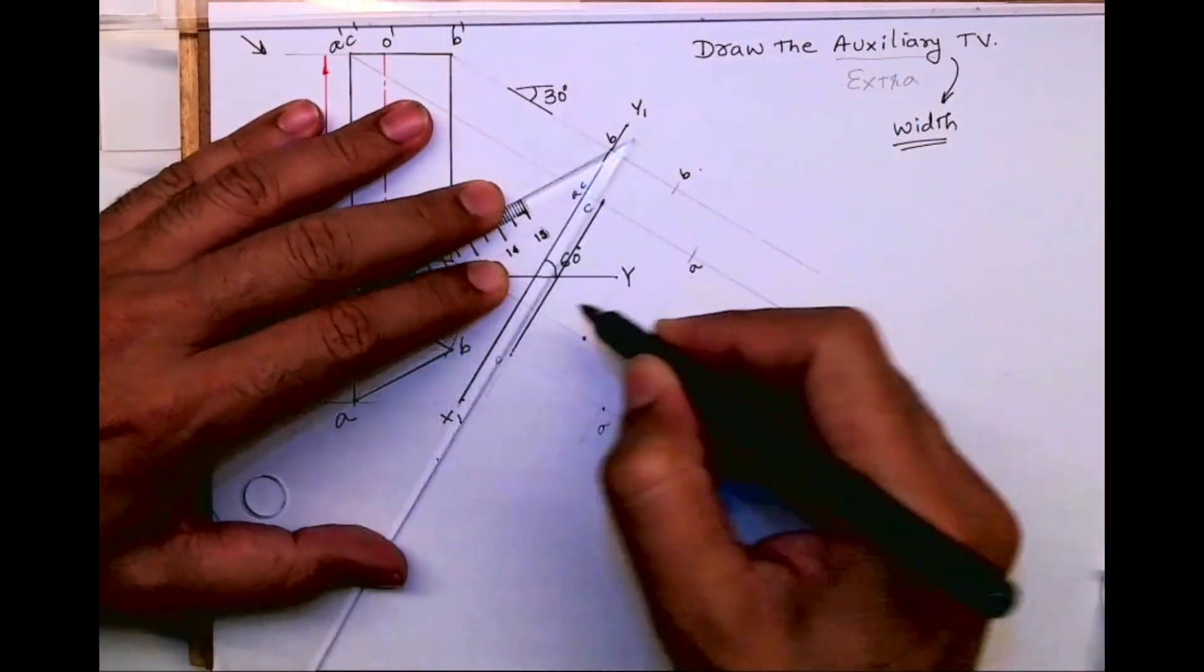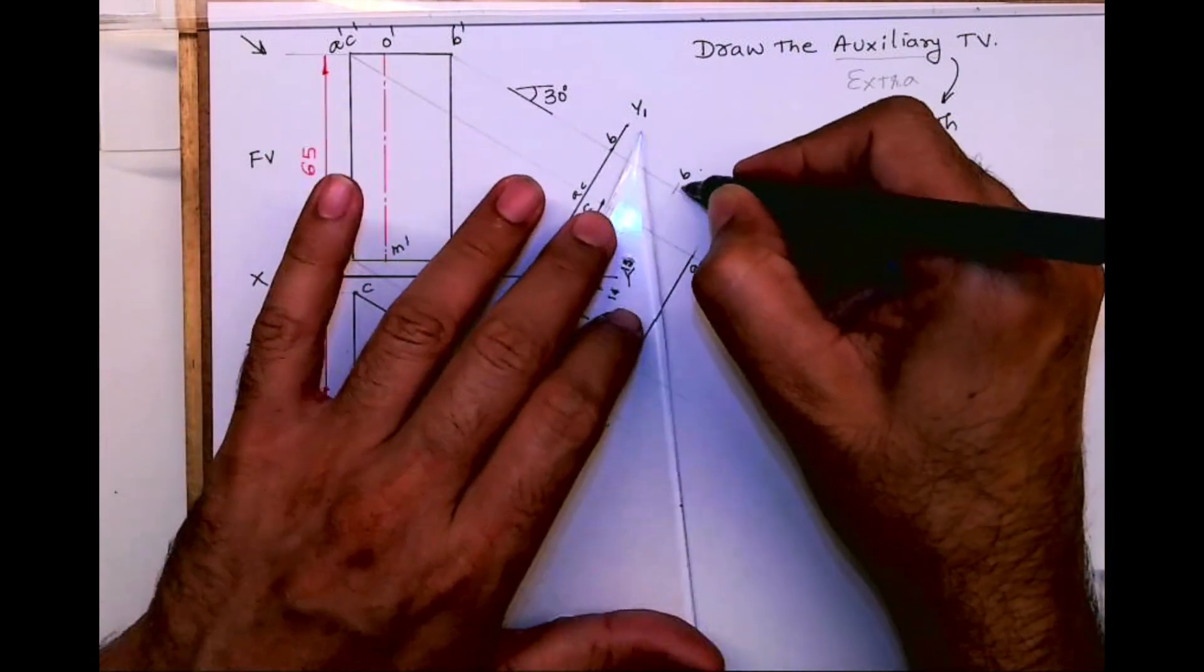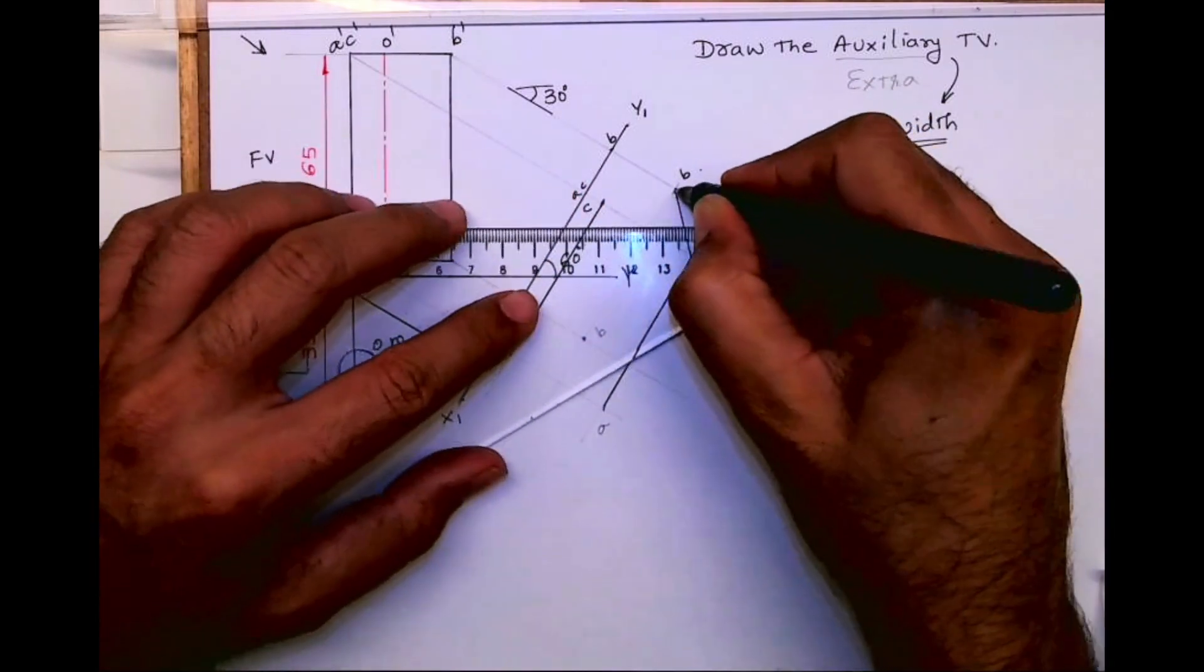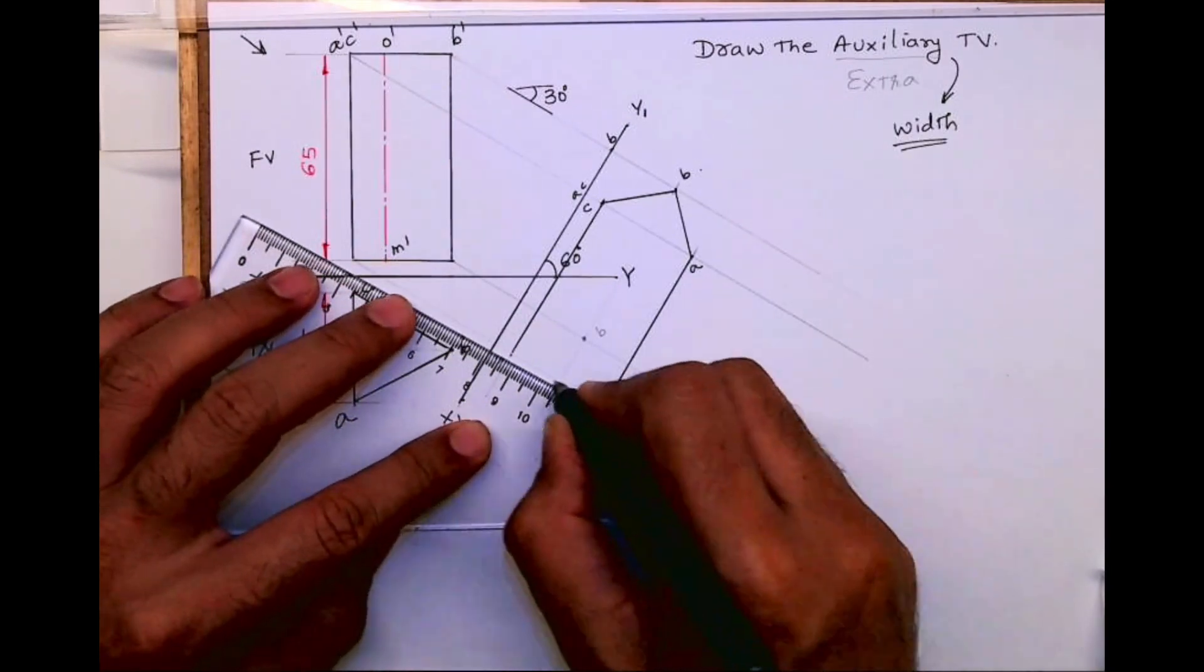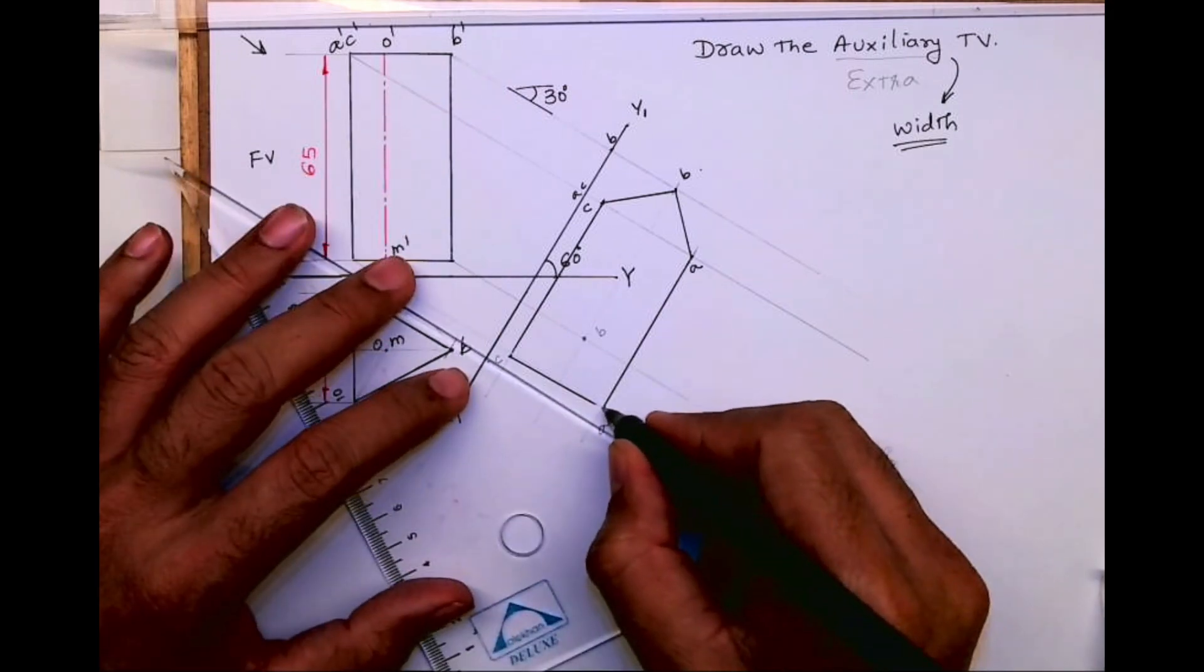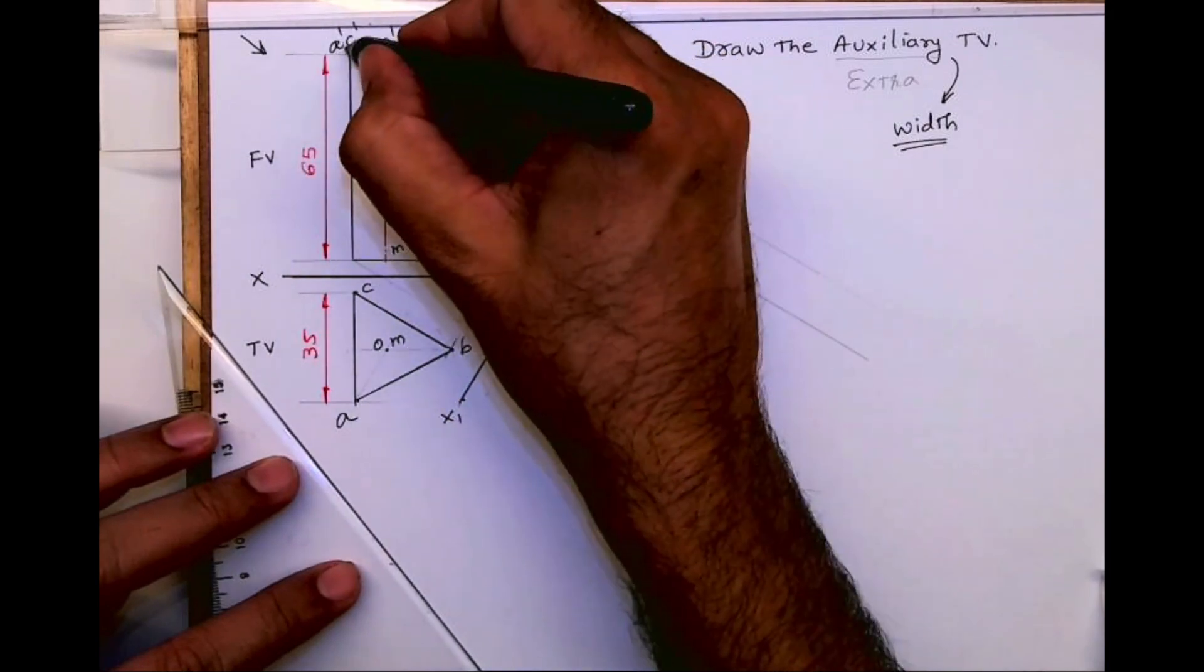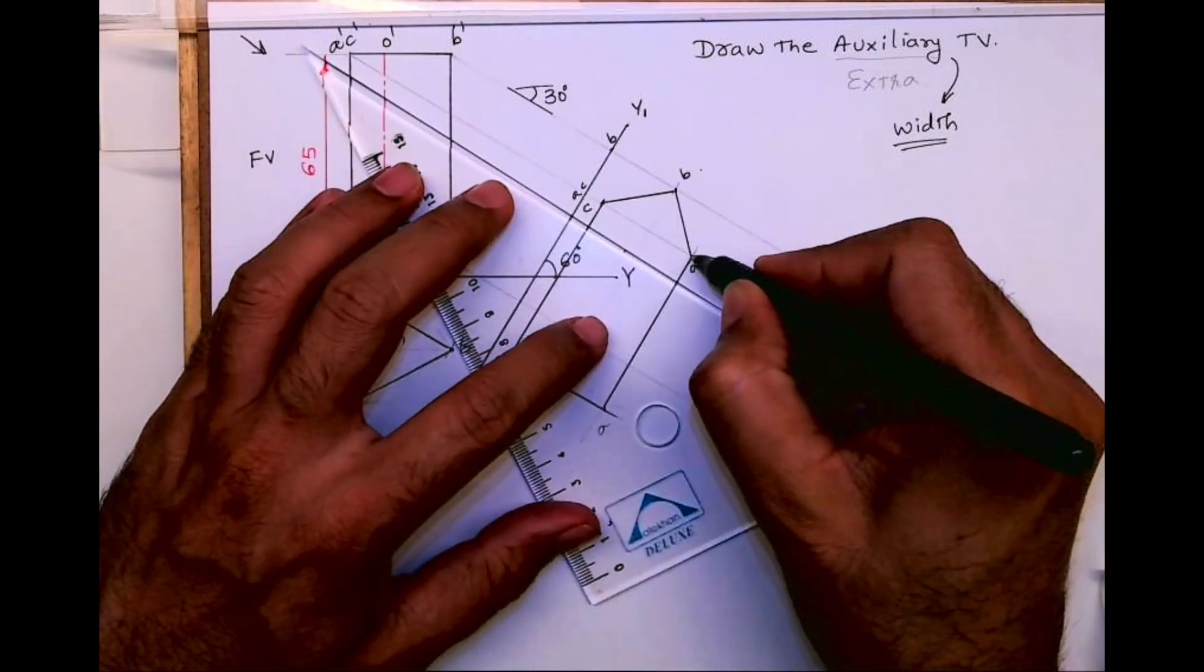First I will draw extreme boundary, will be dark. All boundary will be dark. Then when I see from here, A and C is nearer to me, right. So A and C will be dark.